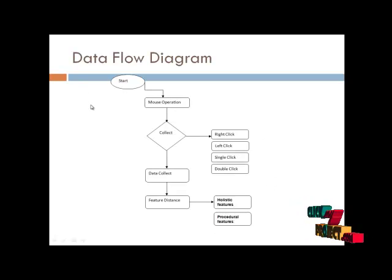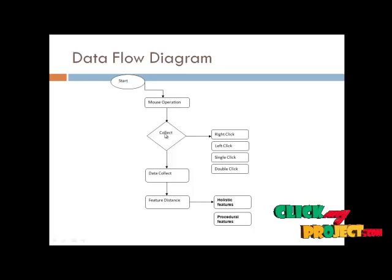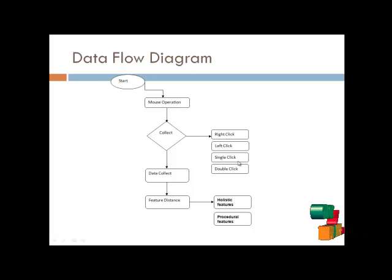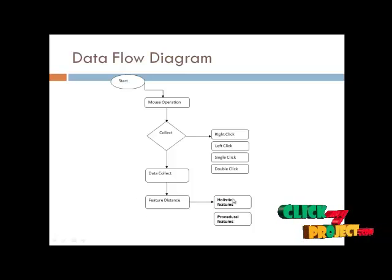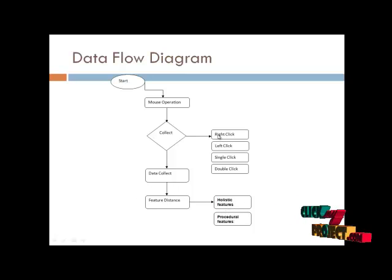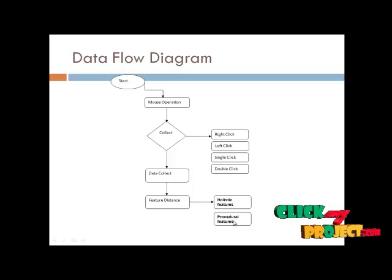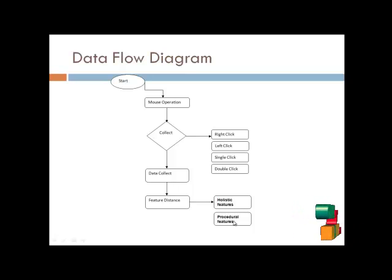Next, the DFT operation: we start the mouse operations and collect results for right click, left click, single click, and double click. The collected data represents feature distance for holistic features and procedural features. From holistic features, we can get the result of the mouse movement position.